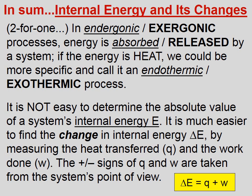It is not easy to determine the absolute value of a system's internal energy, E. It is much easier to find the change in internal energy, delta E, by measuring the heat transferred, q, and the work done, w. The positive-negative signs of q and w are taken from the system's point of view.